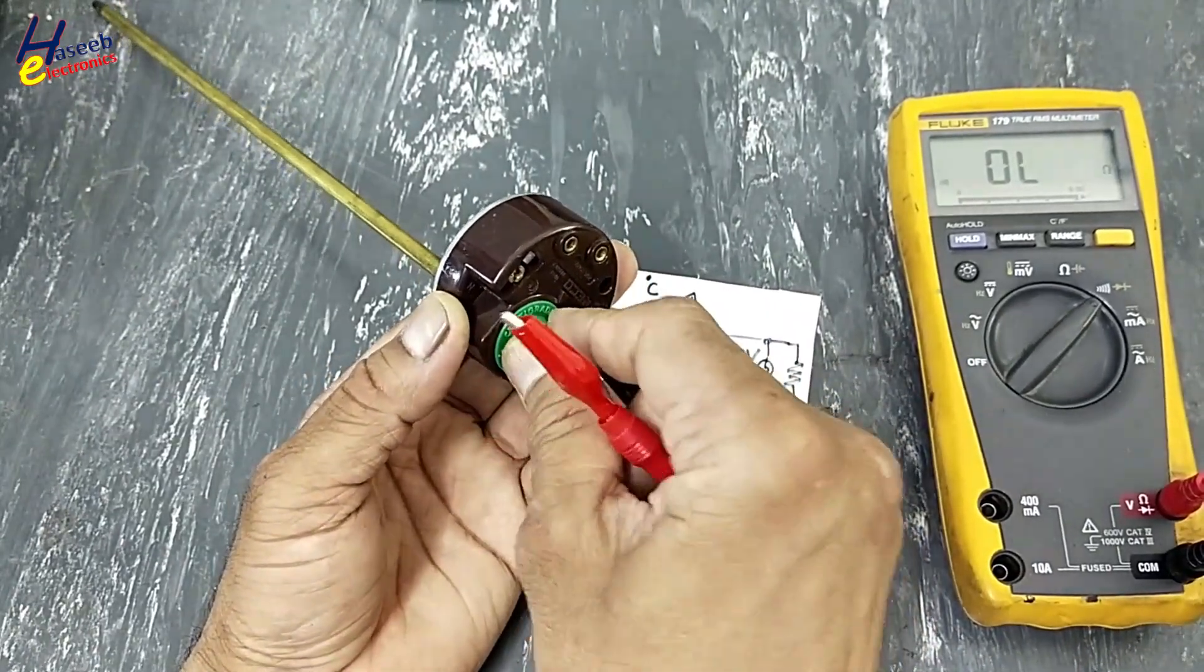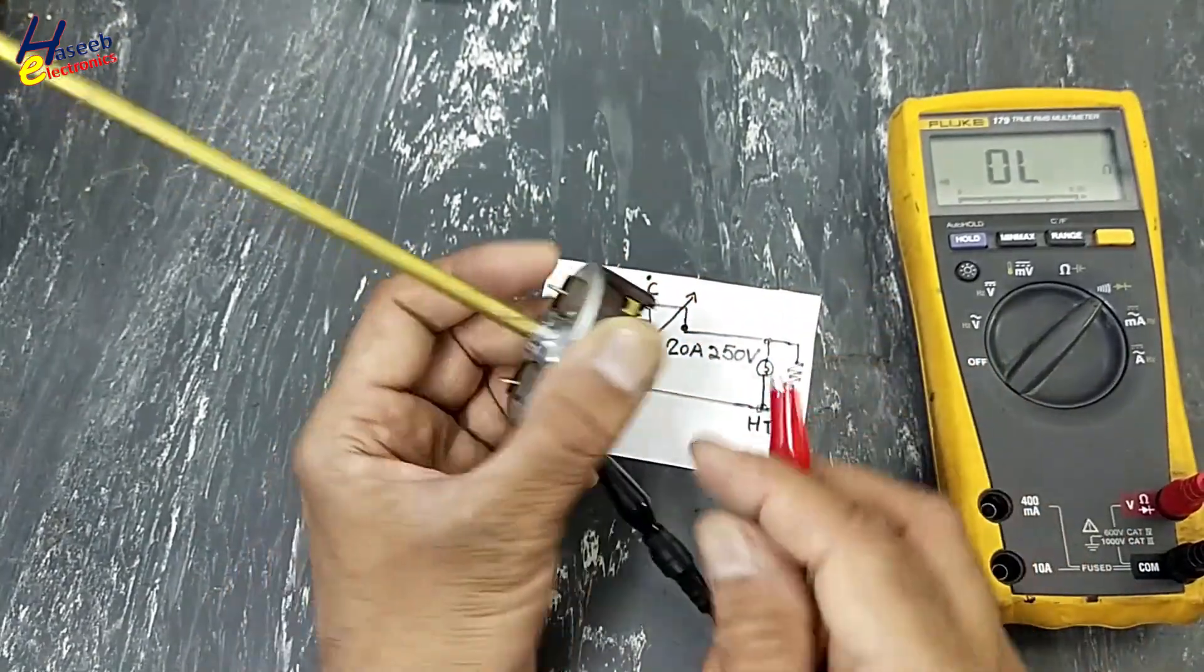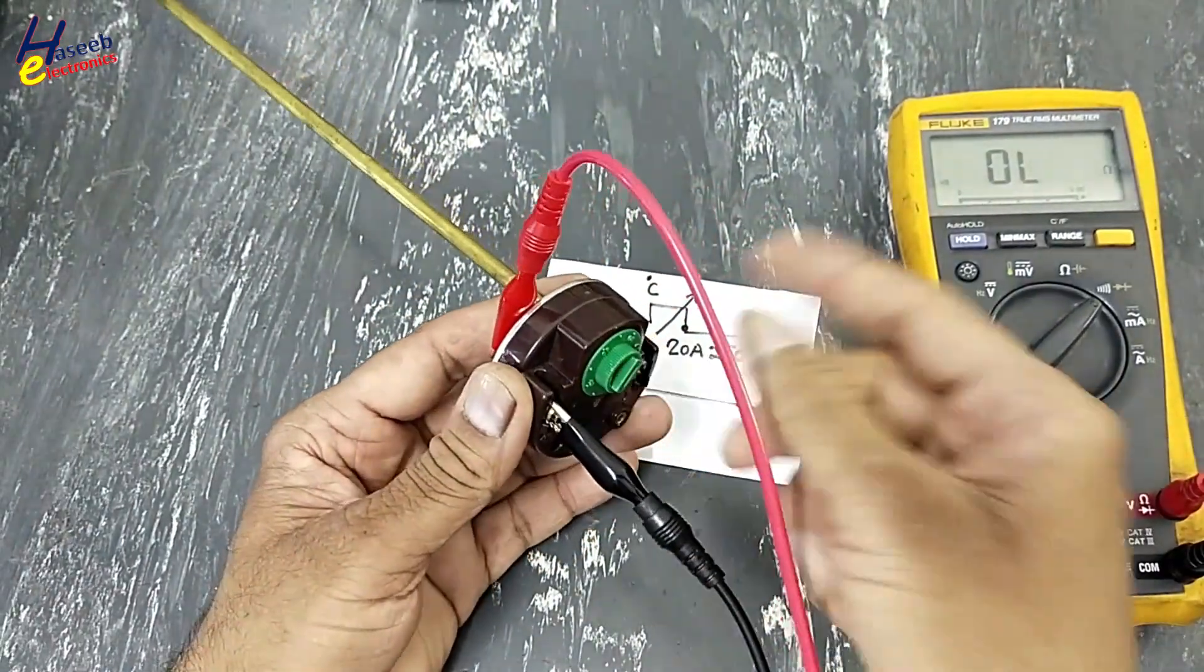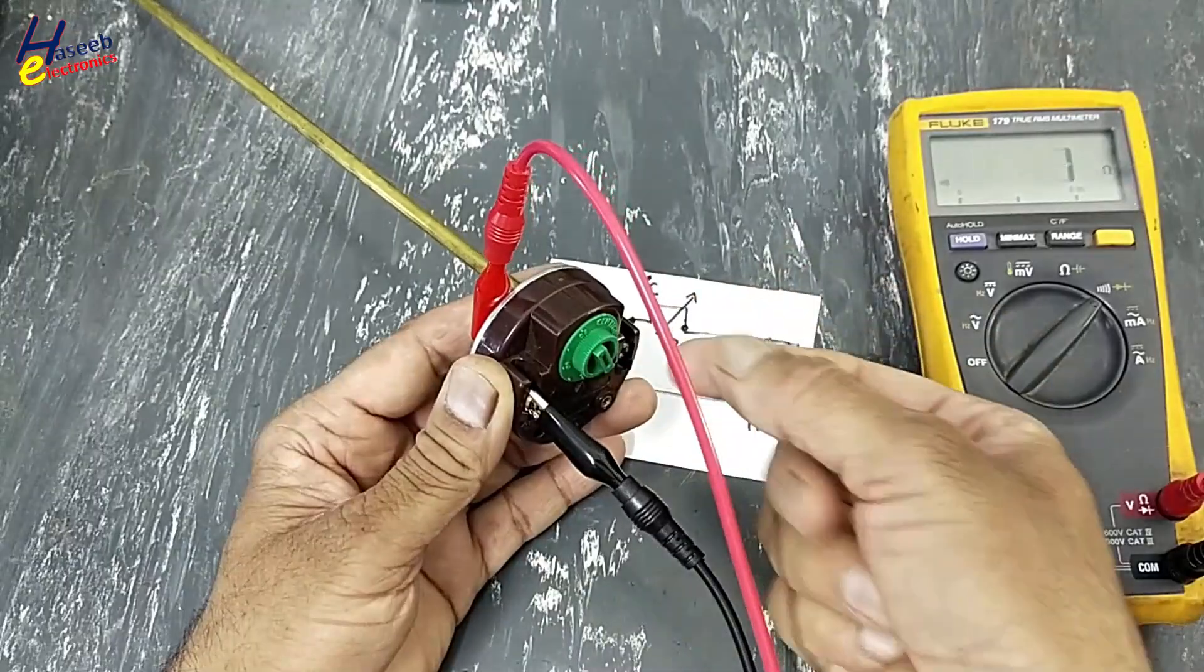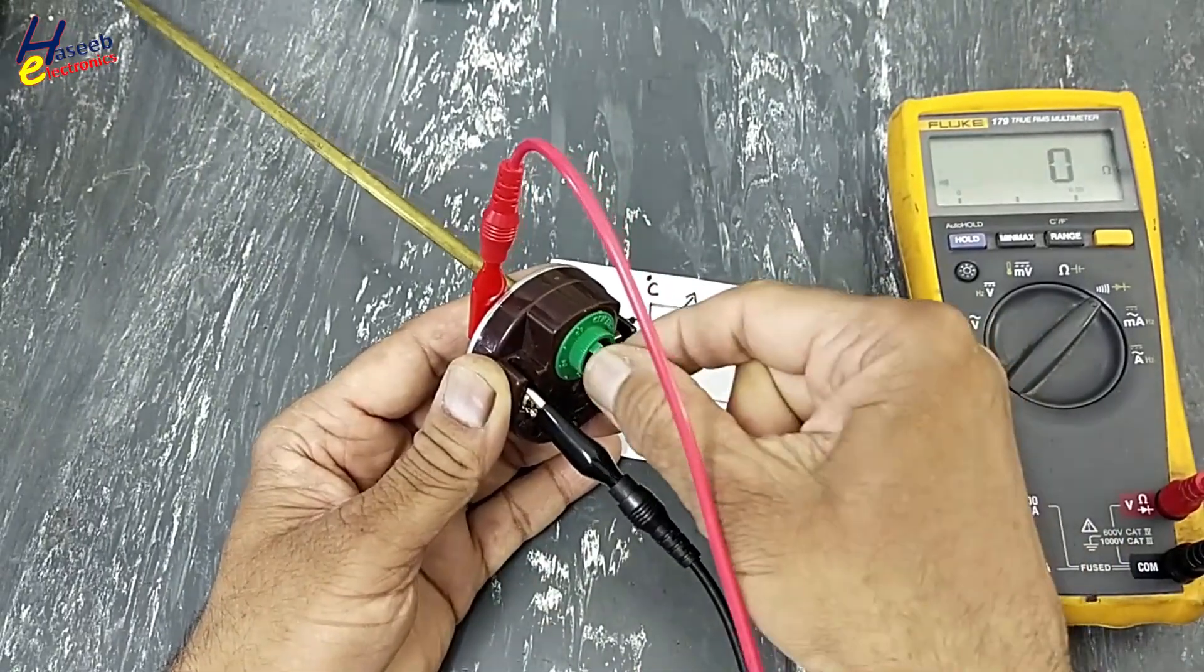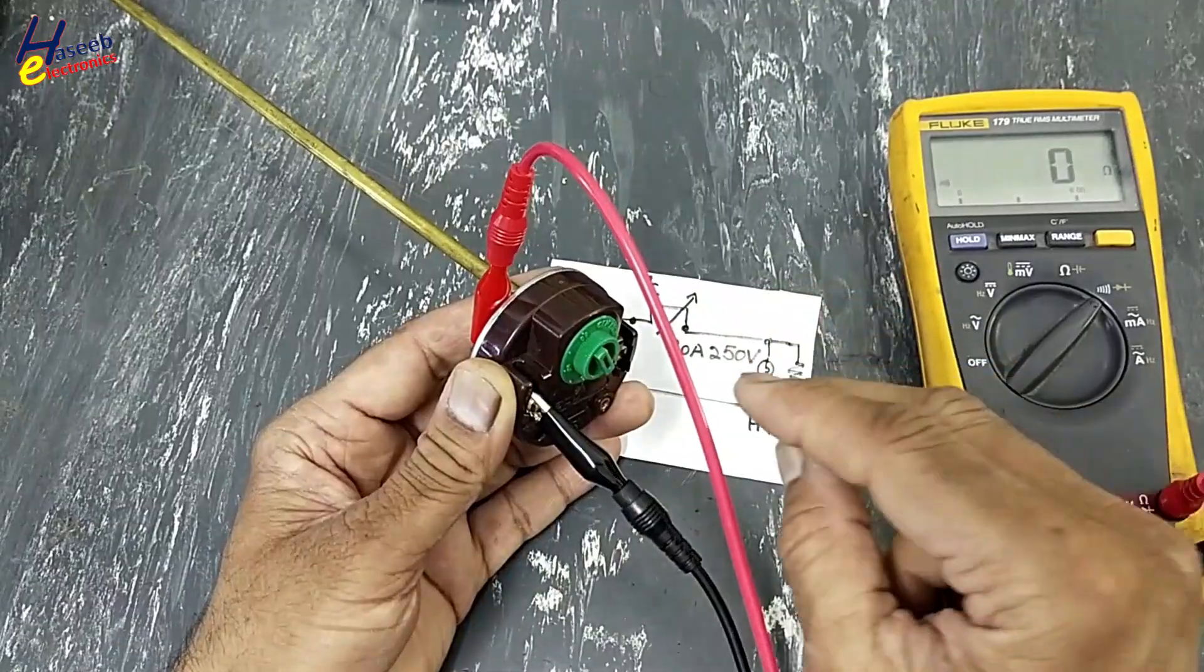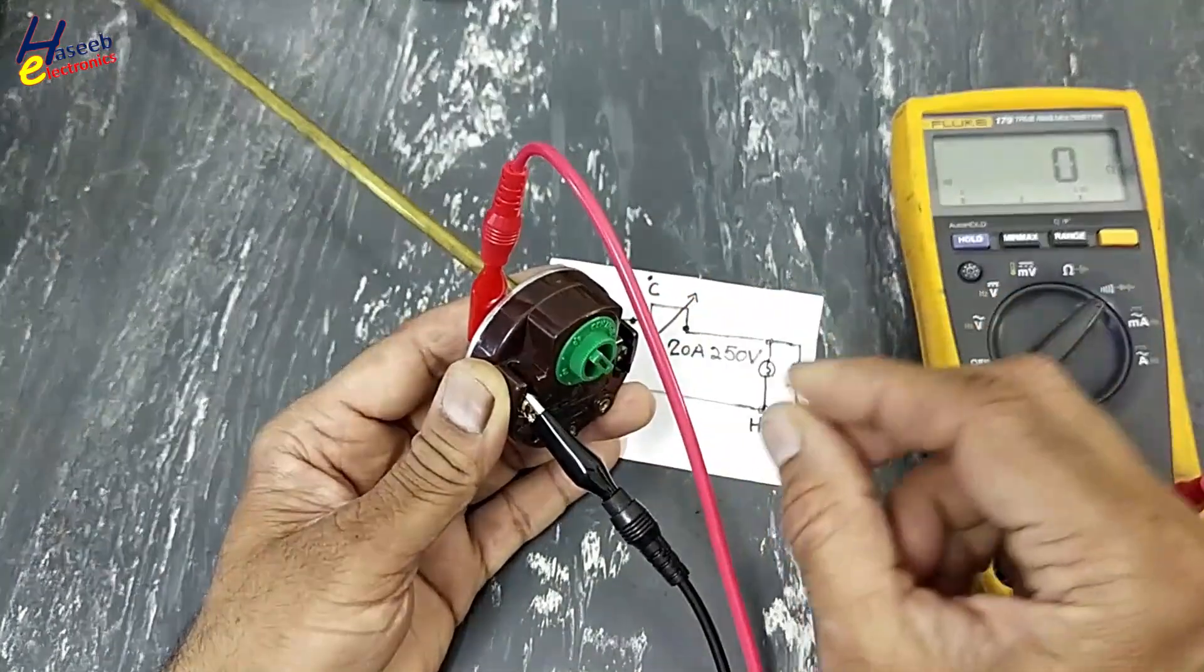We will rotate it to minimum position - it is open circuit, good. Now we will connect here. Off. We will increase the temperature. There is a click sound. The contact is making. Just turn it on.